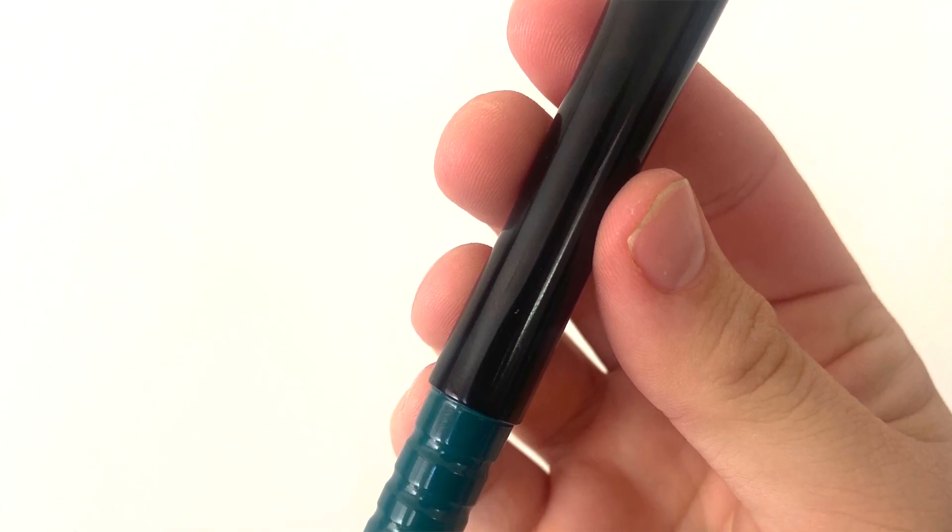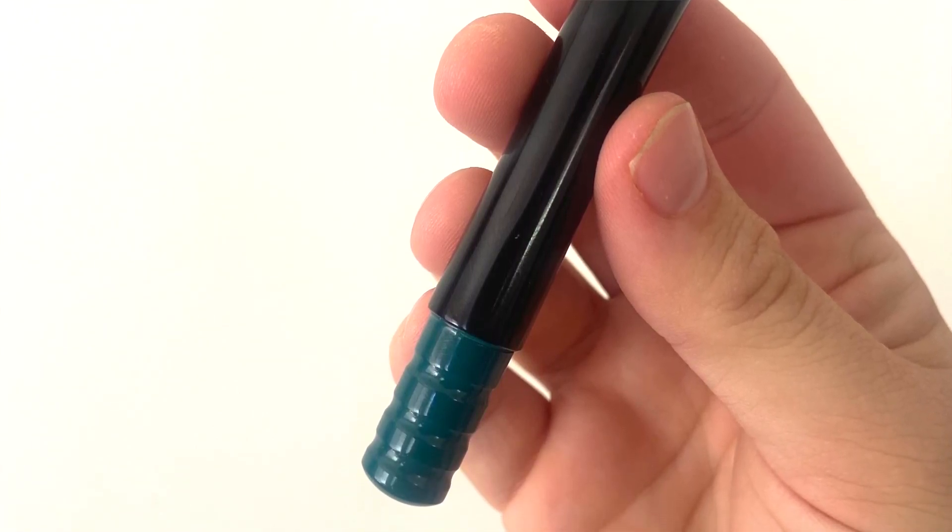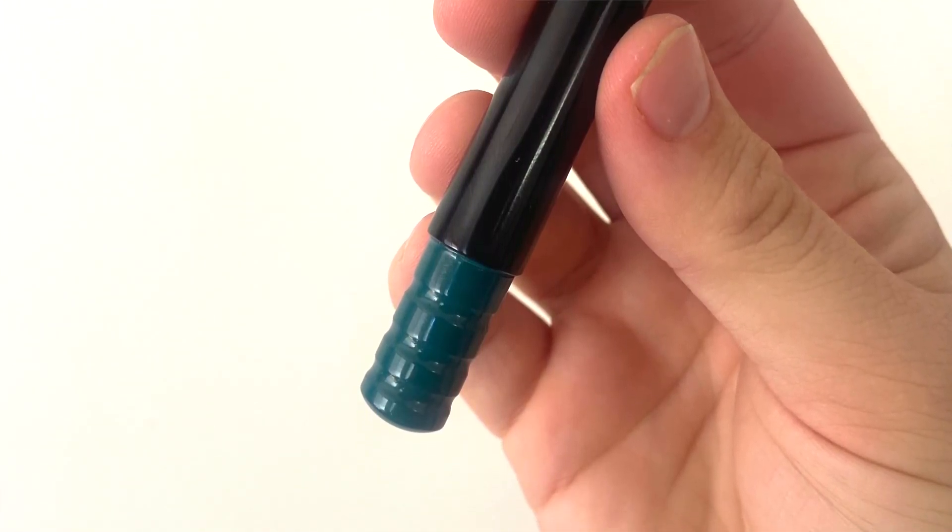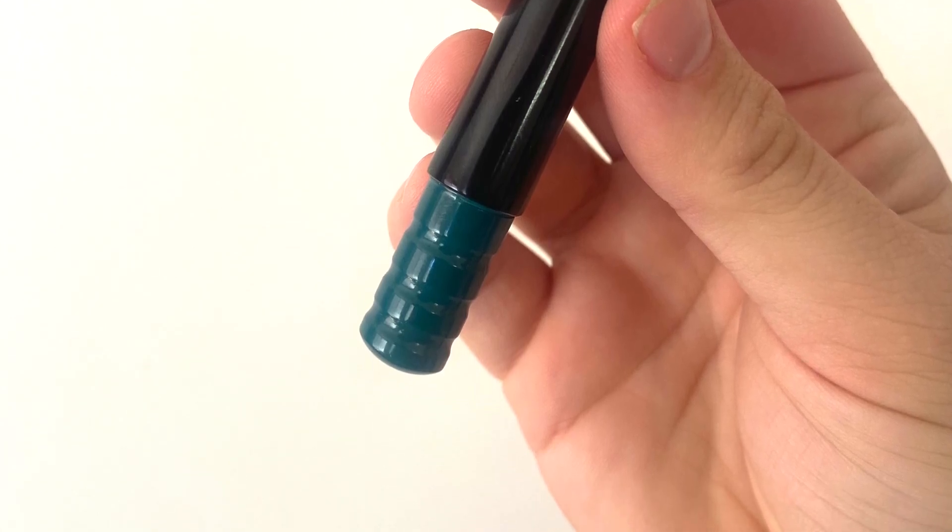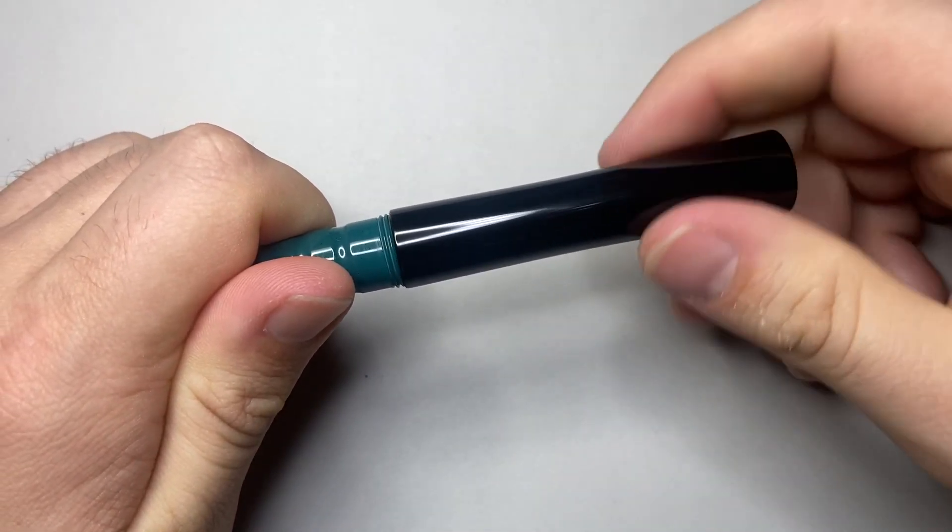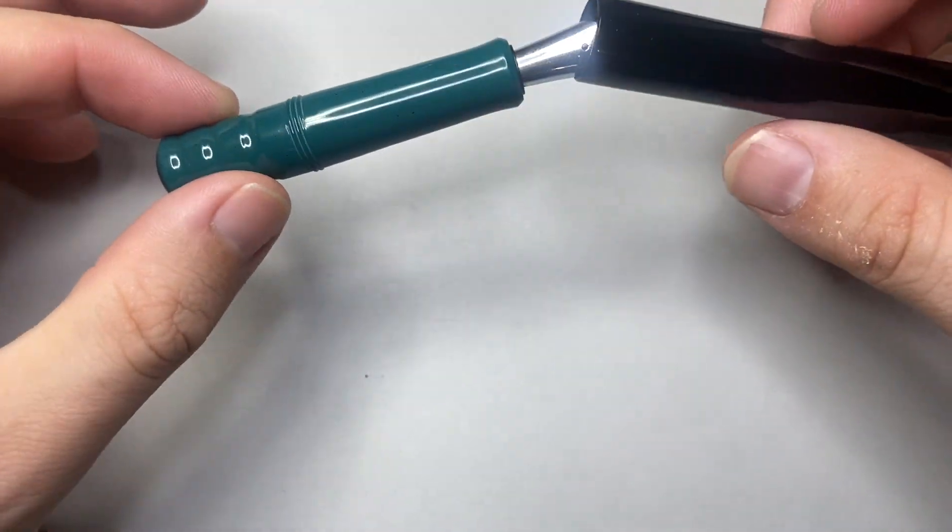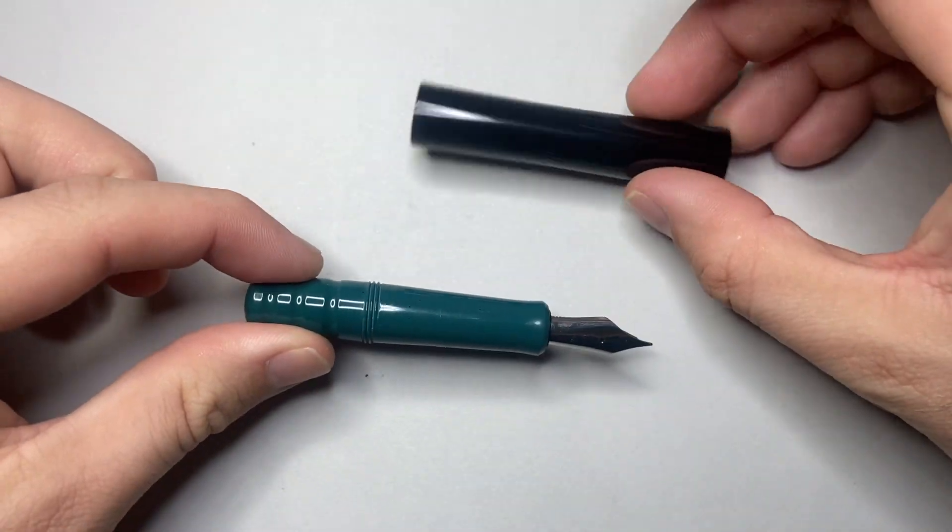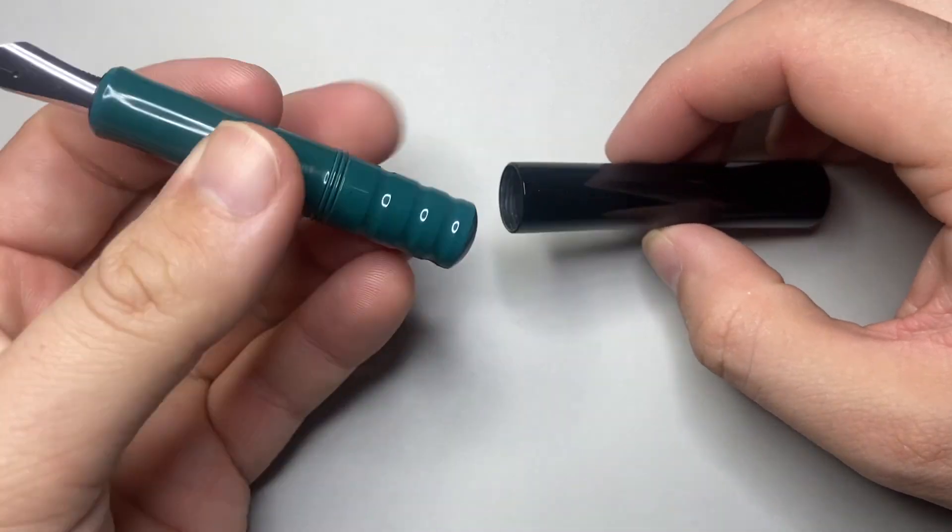It comes with a number 6 size Bock steel nib, either extra fine, fine, medium, or broad. Let's talk about the parts and features and do a writing sample. The pen unscrews in just under two turns.